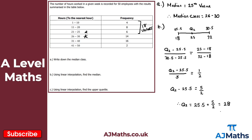Adding 25.5 to both sides: Q2 = 25.5 + 5/2 = 28. Remember, this is just an estimate, not an exact answer. That is our estimate for the median using linear interpolation for part B.